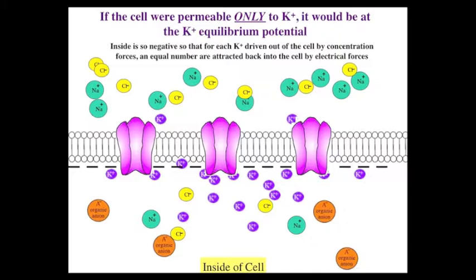If the cell were only permeable to potassium and had a concentration difference where the inside of the cell was more concentrated than the outside, it would establish the potassium equilibrium potential, where the inside is so negative that for each potassium driven out of the cell by its concentration force, an equal number would be attracted back into the cell by the electrical forces. You get one in, one out, with no net change in potassium. The cell would neither gain nor lose potassium. It would be in equilibrium and stay that way ad infinitum so long as nothing else changed.